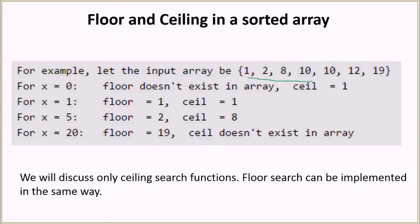If we are given this array and x is equal to 0, then the floor is the greatest element which is smaller than or equal to x. There is no element which is smaller than or equal to x in this array, so floor does not exist. Ceiling is the smallest element which is greater than or equal to x, so that would be 1 — it is greater than or equal to x and also the smallest such element. So ceiling is equal to 1.